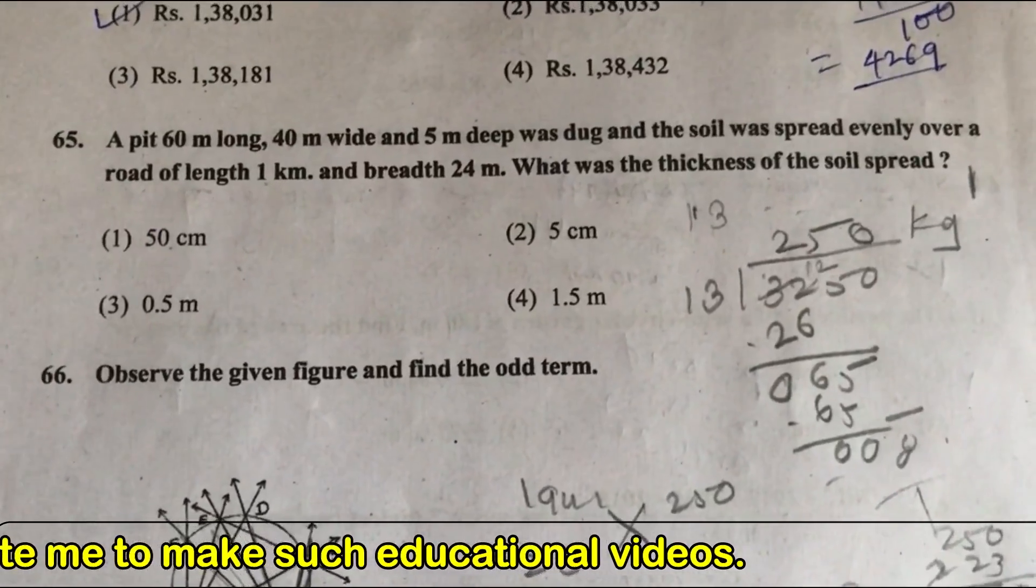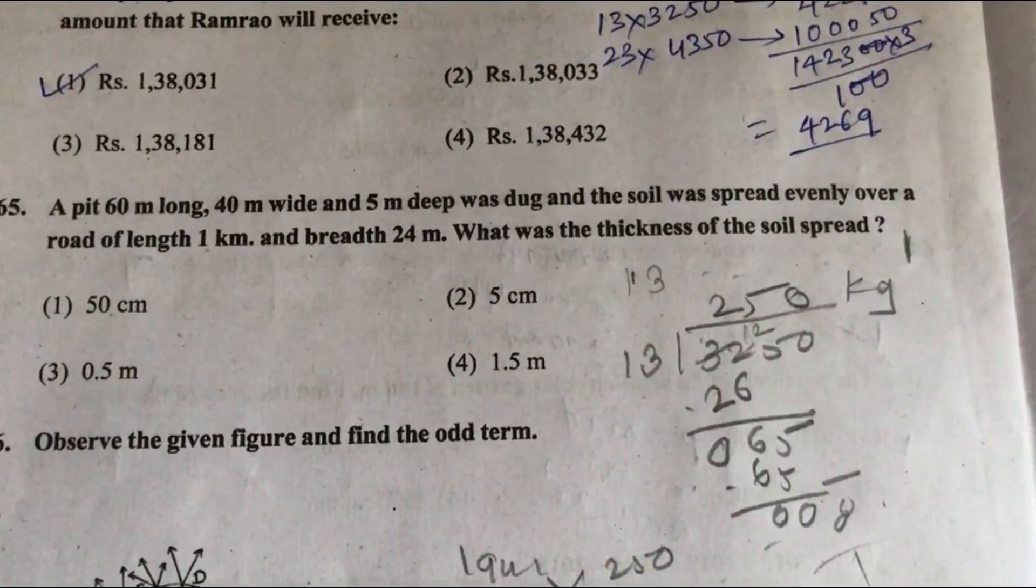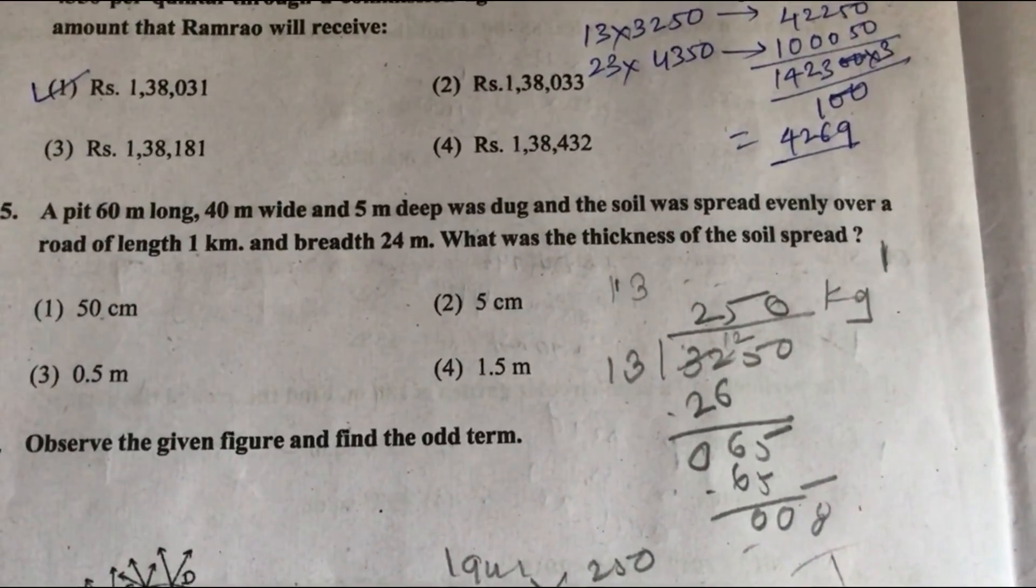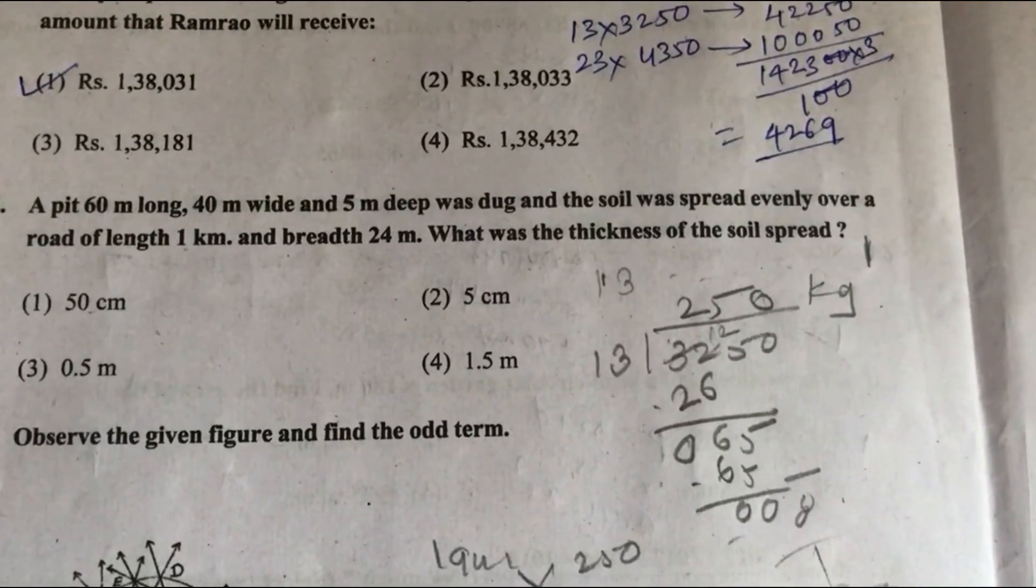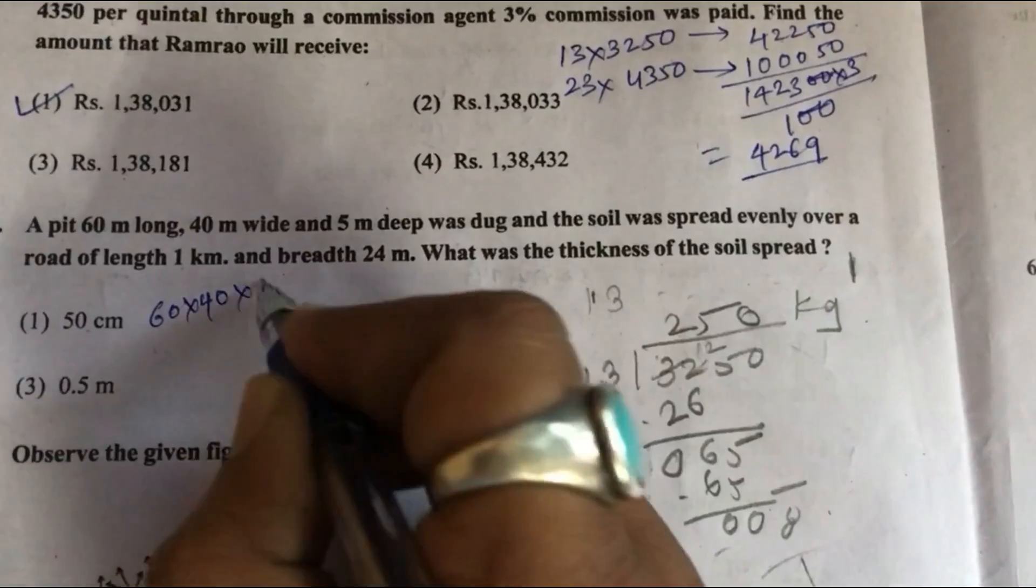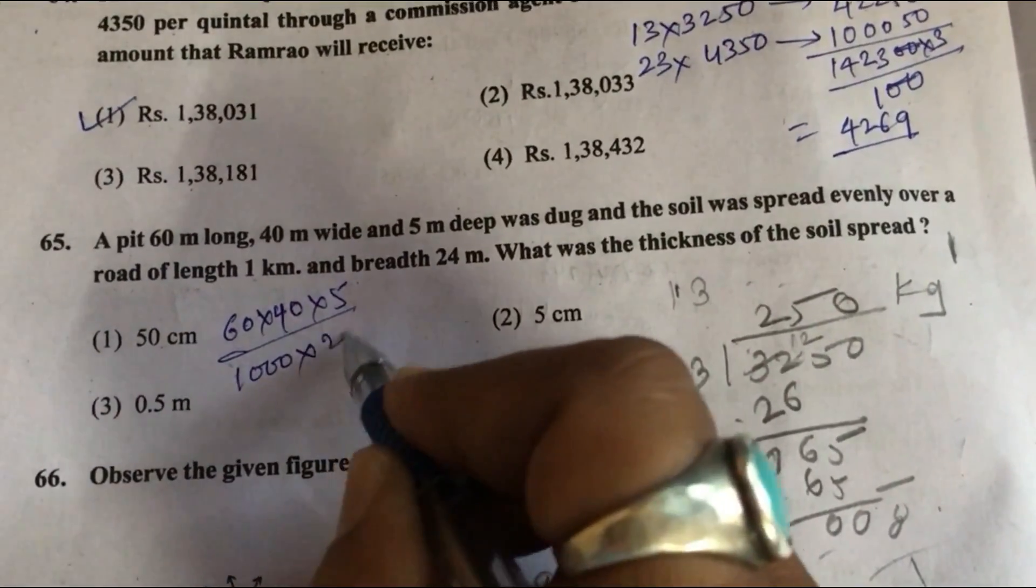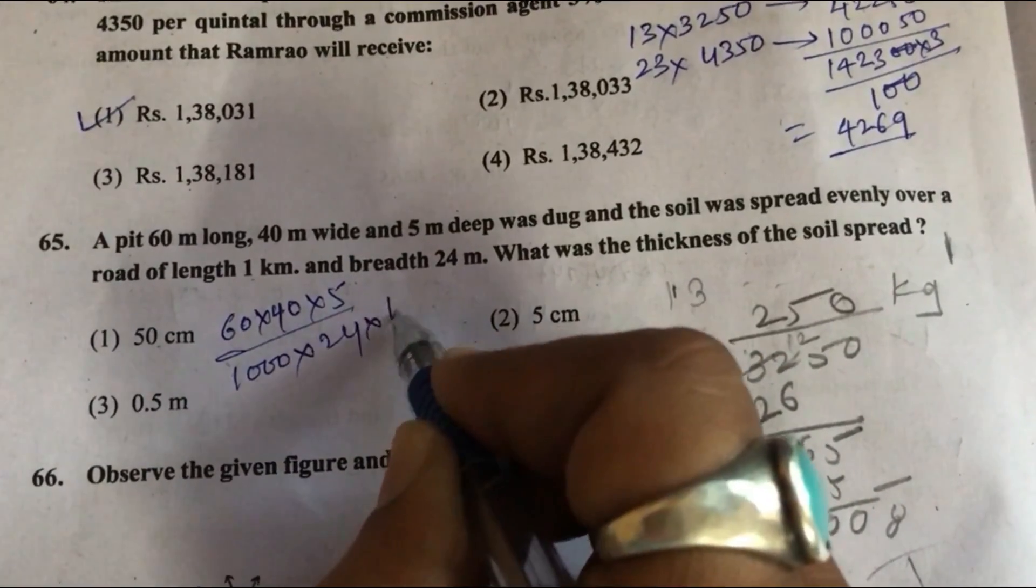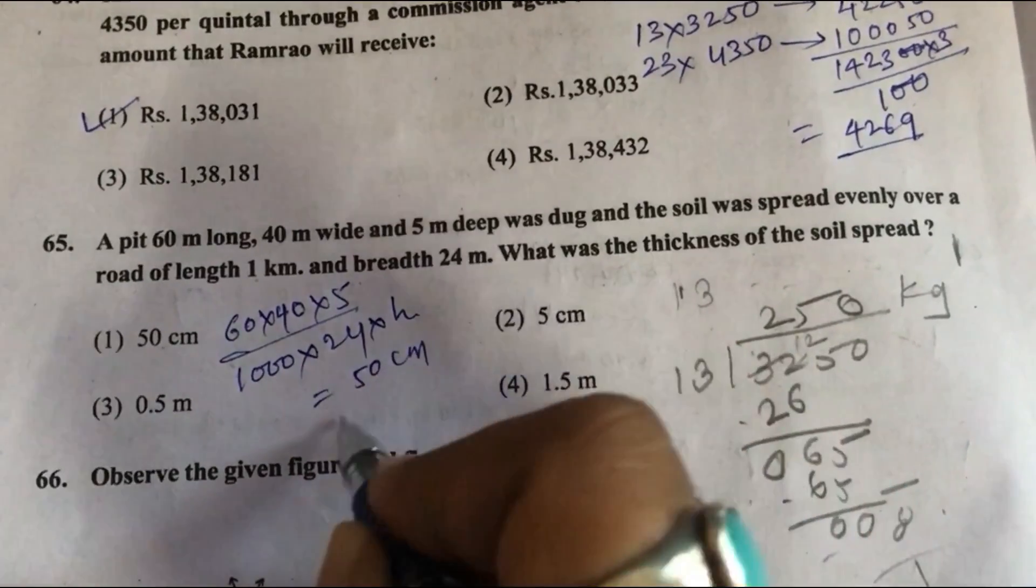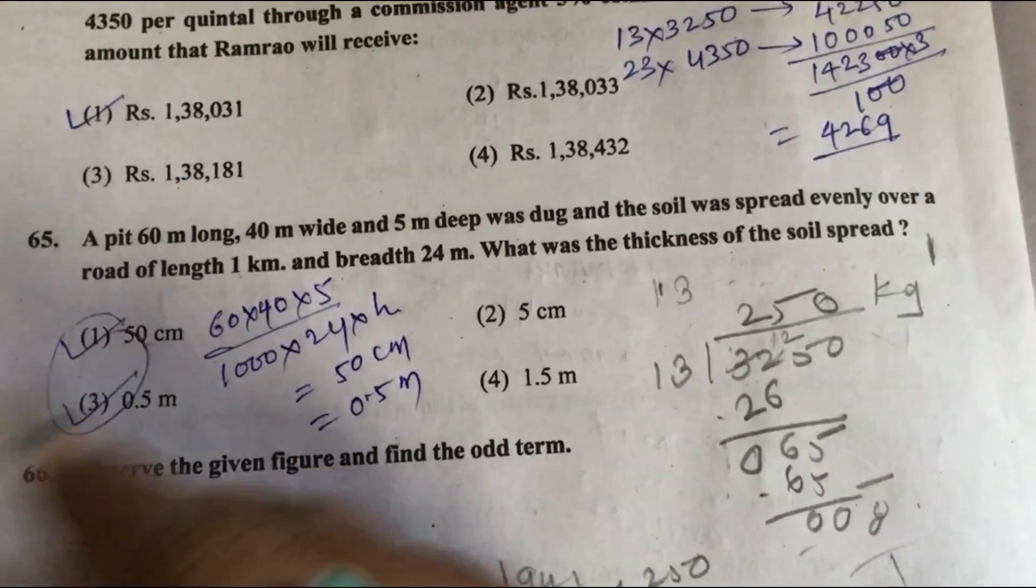Question 65: A pit 60 meter long, 40 meter wide and 5 meter deep was dug and the soil was spread evenly. What was the thickness of the soil spread? First we will find volume. Then this divided by 1 kilometer converted into meters. Thickness is height. After solving, we will get 50 centimeter or 0.5 meter. Both of the answers are correct.